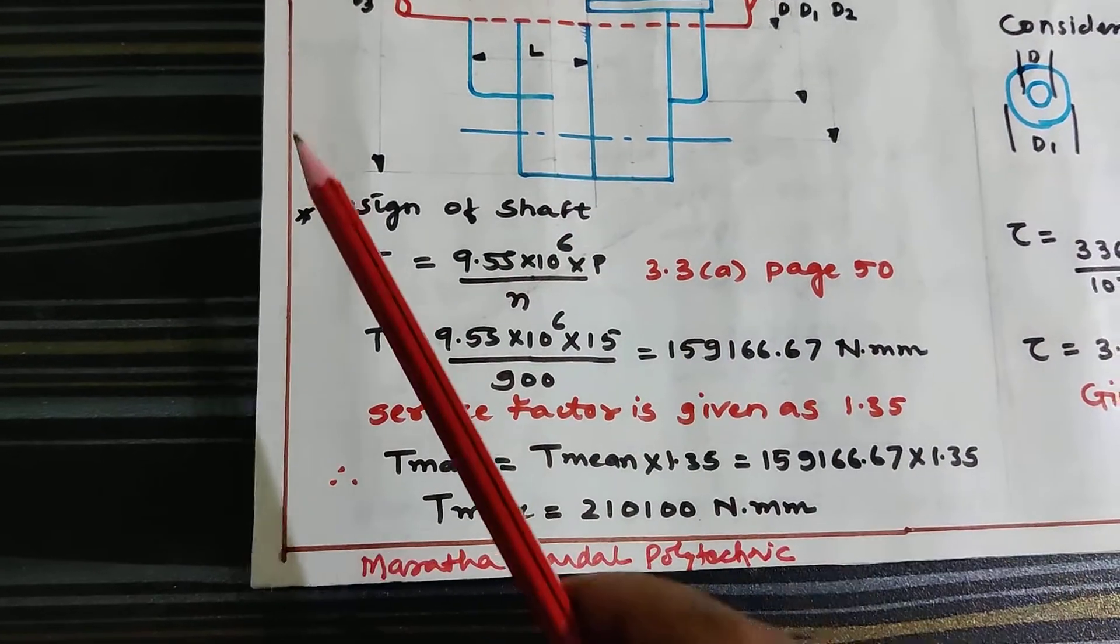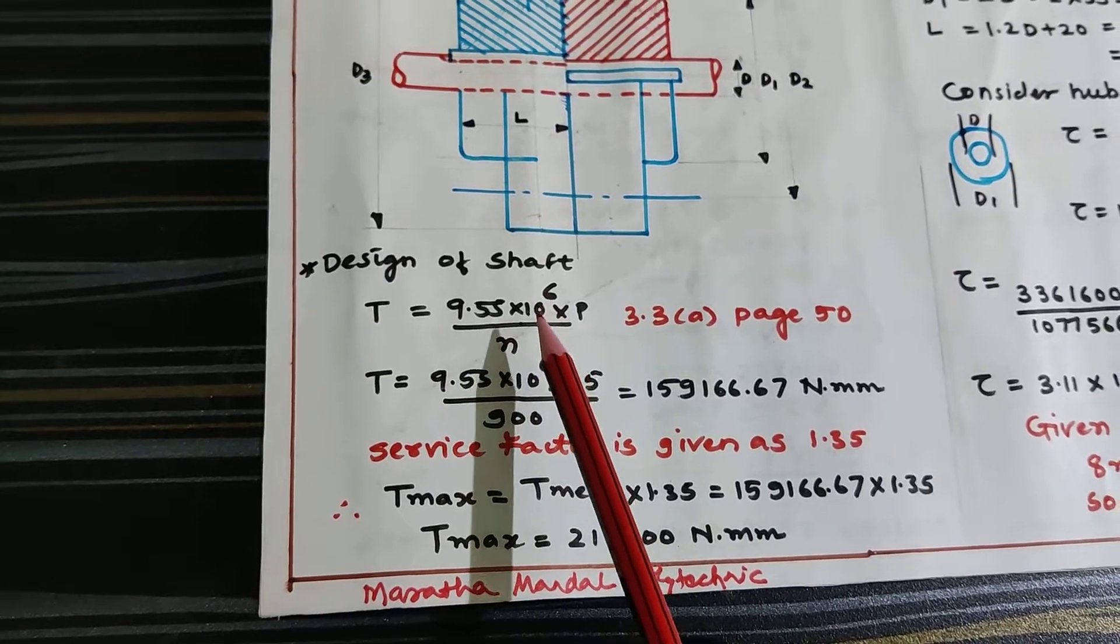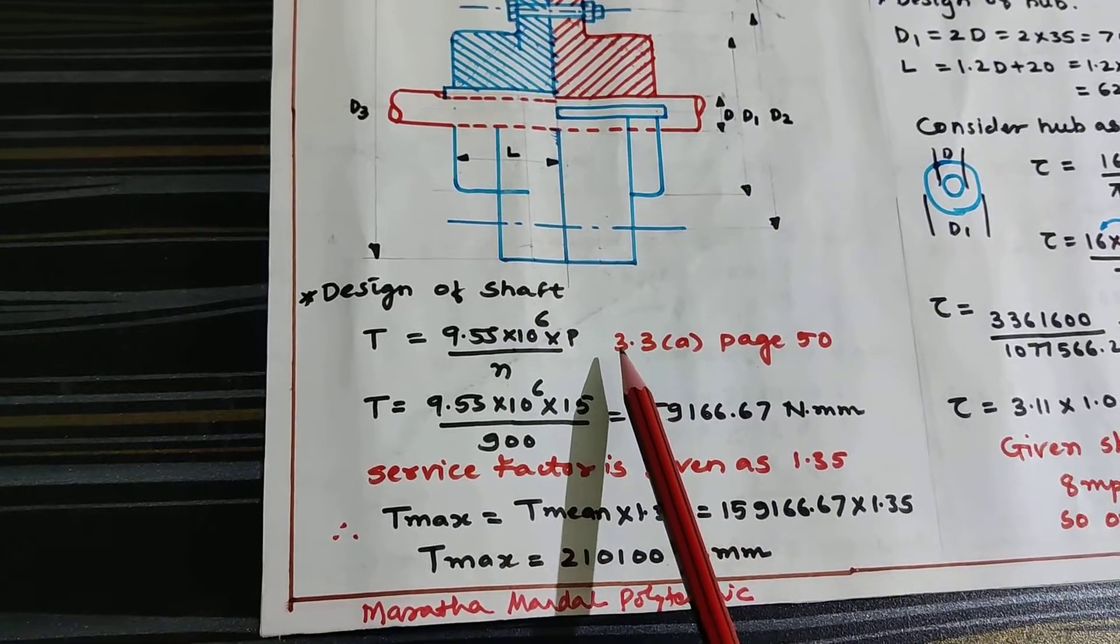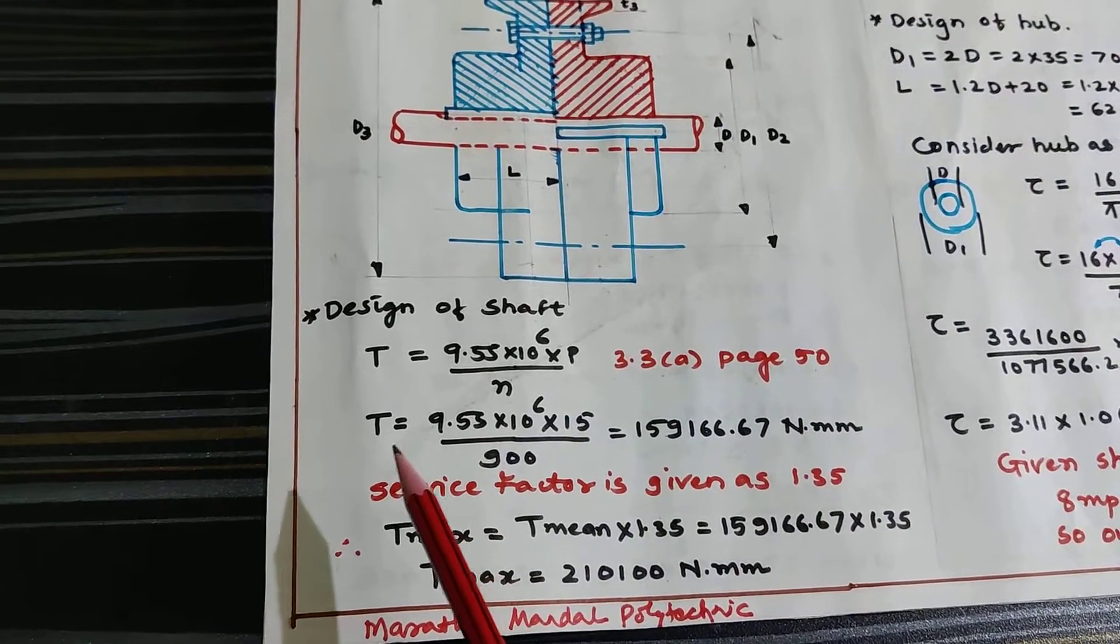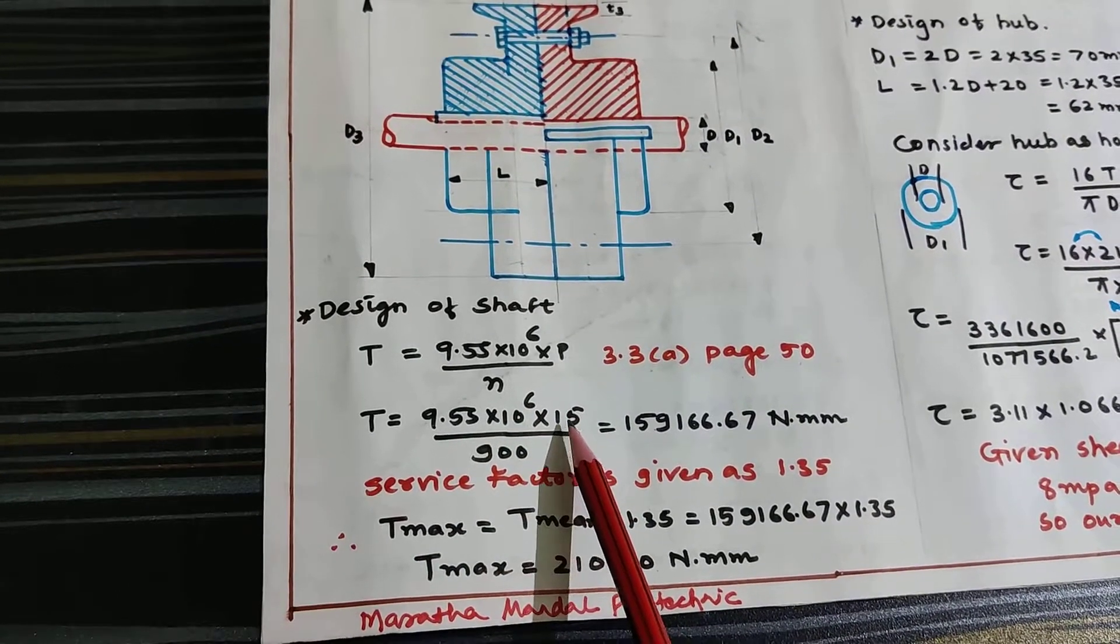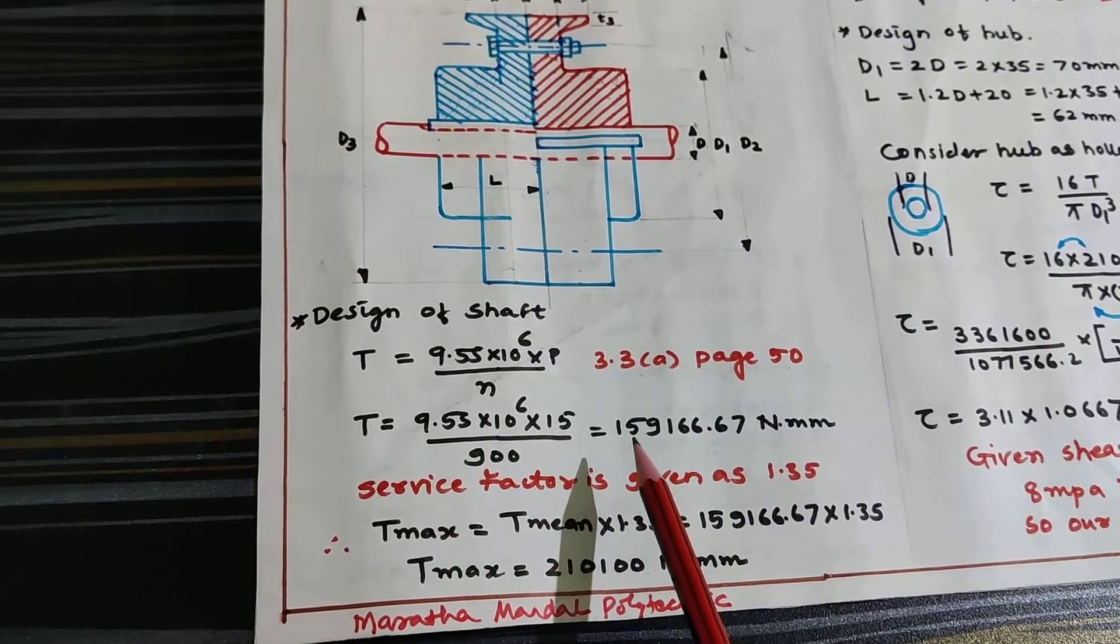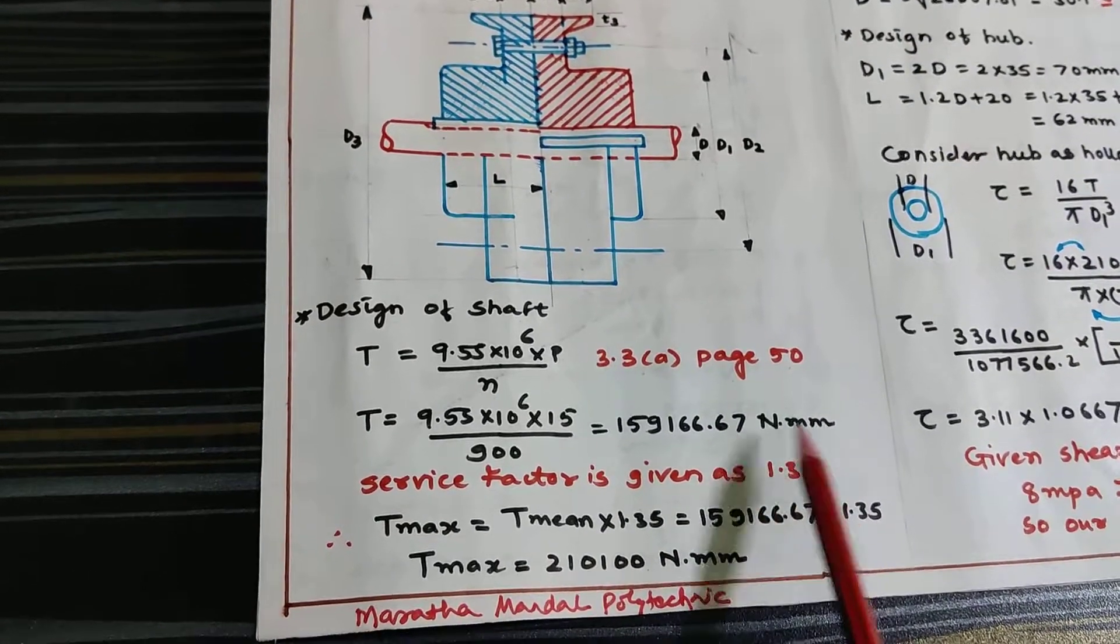Let's start with the design of shaft. The torque is equal to 9.55 × 10^-6 × P divided by N, where P is power and N is RPM. This formula is from equation 3.3a, page number 50. Substitute the values: 9.55 × 10^-6, power is 15 and RPM is 900.